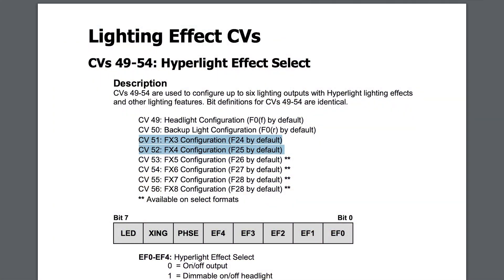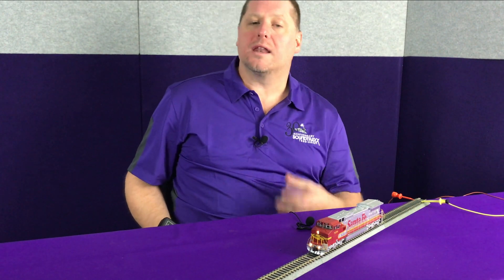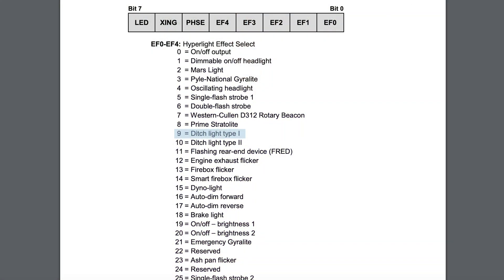The Hyper Light CVs for the FX3 and FX4 are CV 51 and CV 52. We're going to tell the decoder what lighting effects or Hyper Light effects we want those lighting outputs to display when they're illuminated. Let's start with CV 51 for the FX3. When we go to our chart, we see that a value of 9 is the Type 1 ditch light.